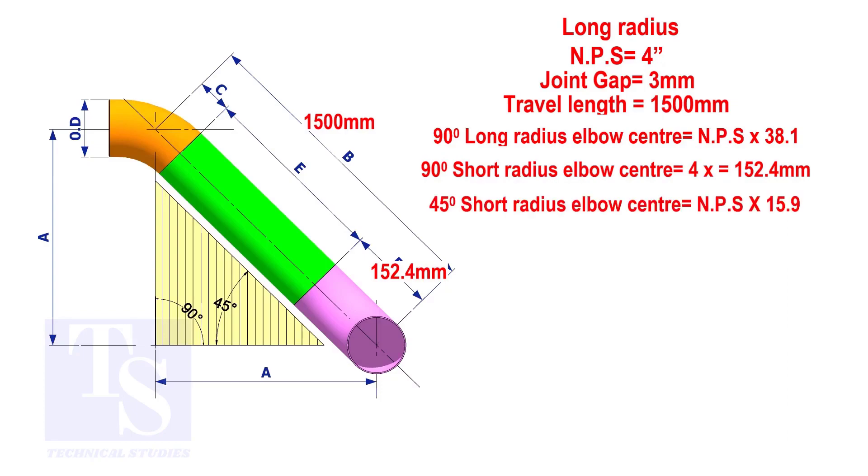To calculate the elbow center of a 45 degree long radius elbow, multiply the nominal pipe size by 15.9. The answer is 63.6 millimeters.